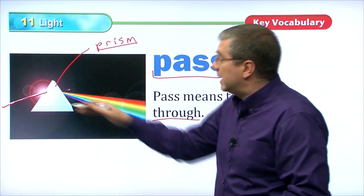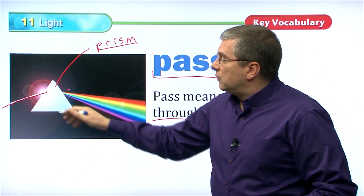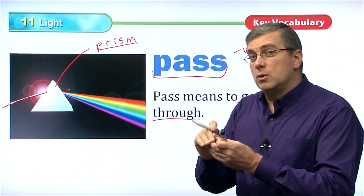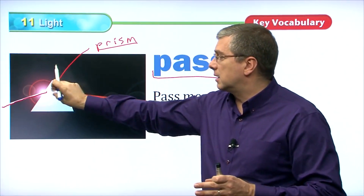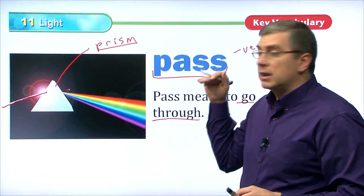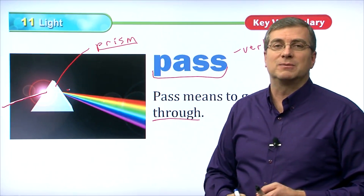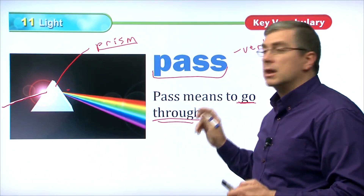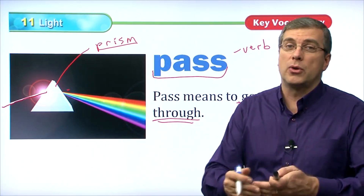It's very fascinating. It's passing through, sure, but it's being split up. If we look at a window, light passes through a window, but it's not being separated by the angle of the glass. It's just going straight through. Light passes through a window very easily because a window is transparent. So to pass through just means to go through. Light passes through some things but doesn't pass through all things.